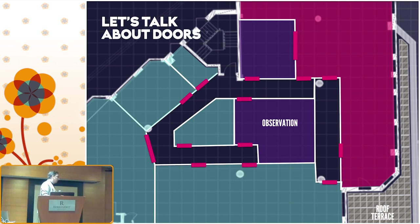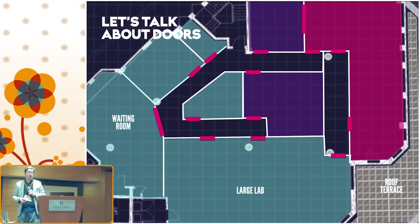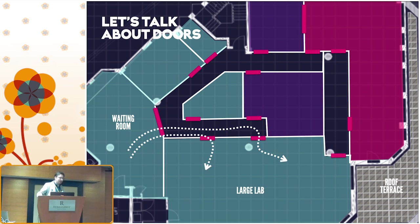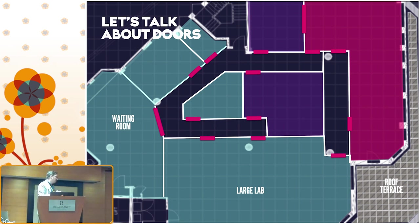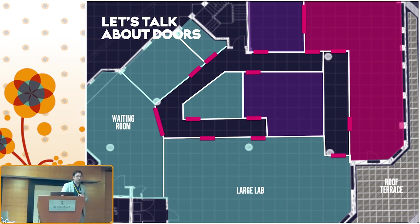Our large lab also has two doors, both entering from the same corridor — this is about traffic. We have 24 booths in our large lab in Brighton, which is a lot of people coming in and finding their booth number. Having two doors breaks that in half. We've also designed the whole large lab so that if we ever need to divide it into two 12-person rooms, we've already got two doors in place for added versatility.